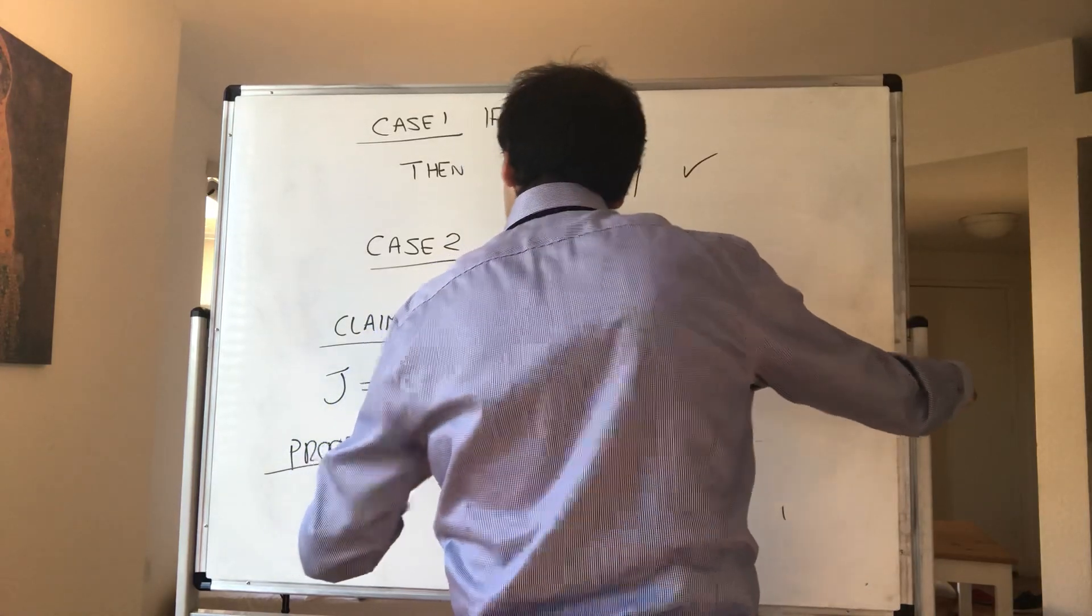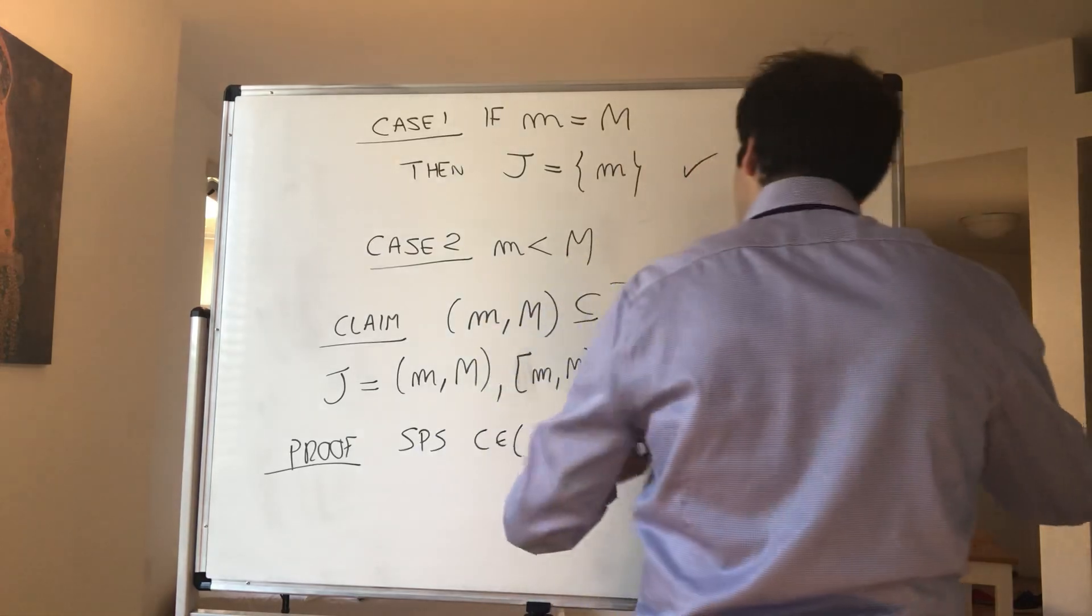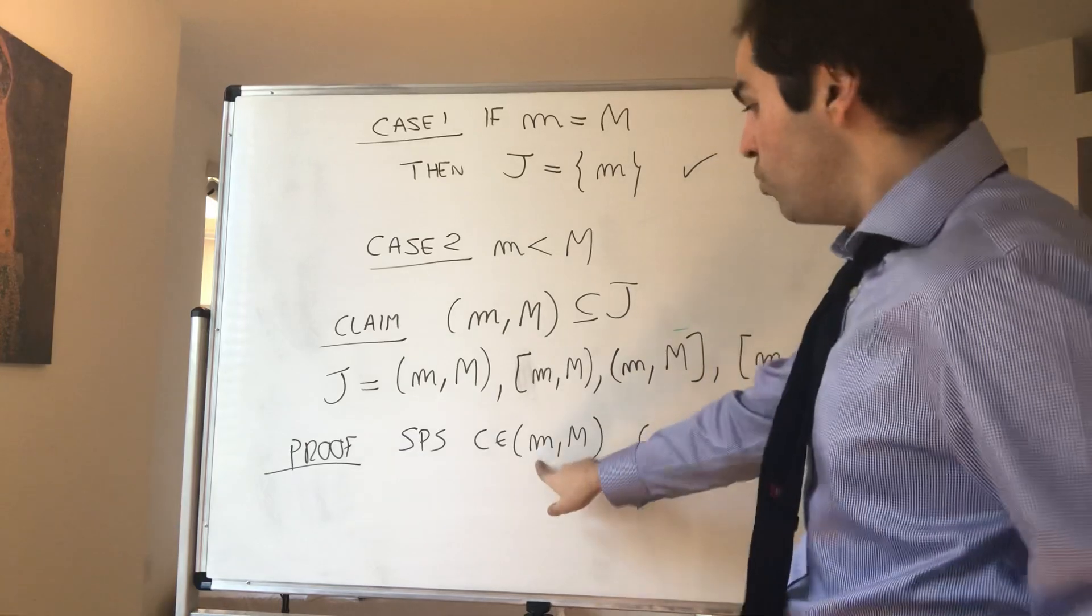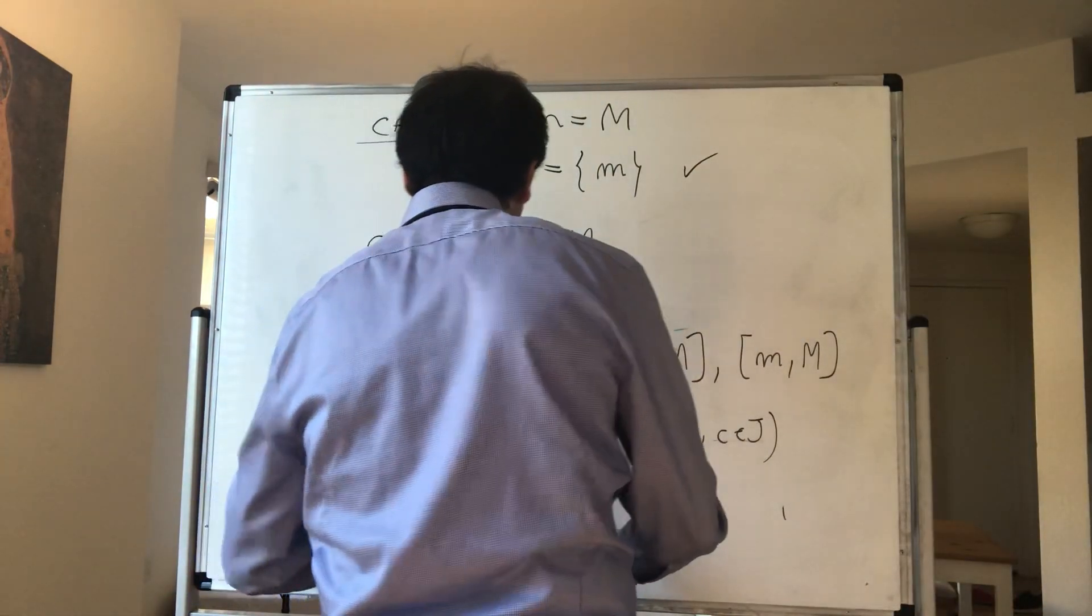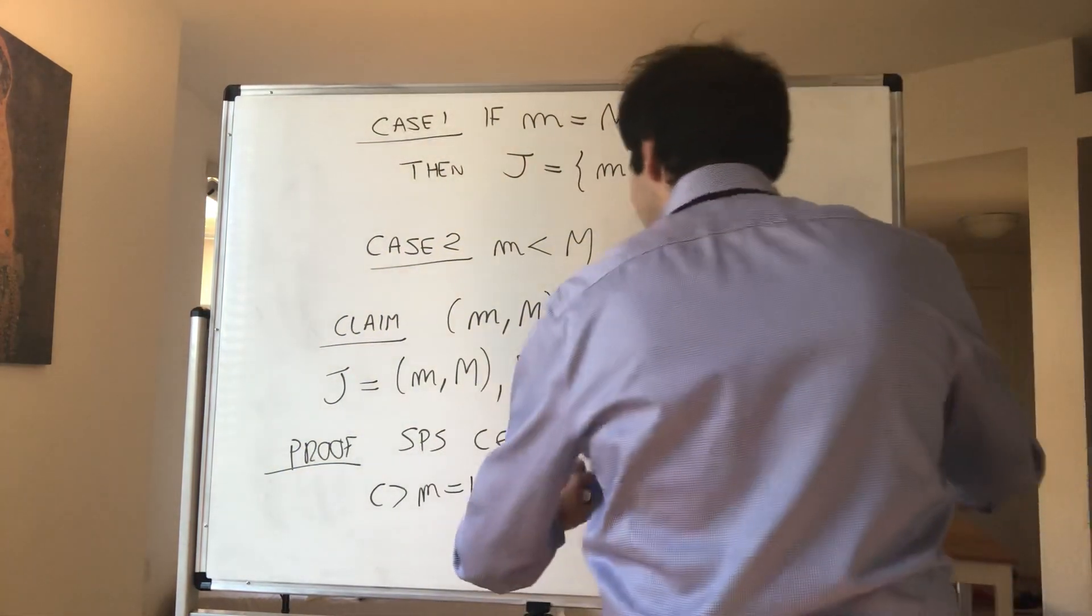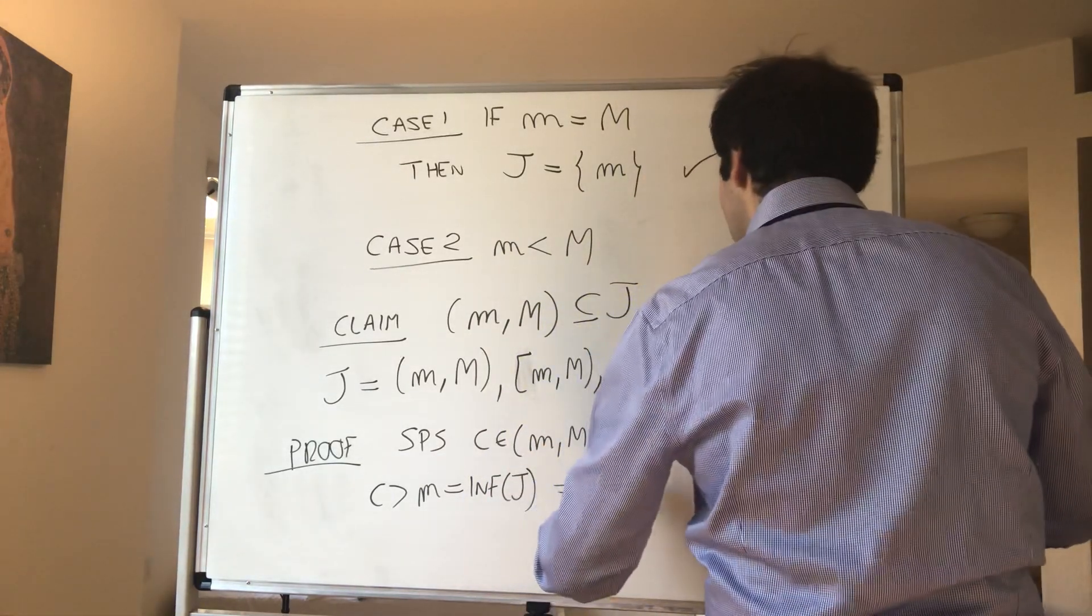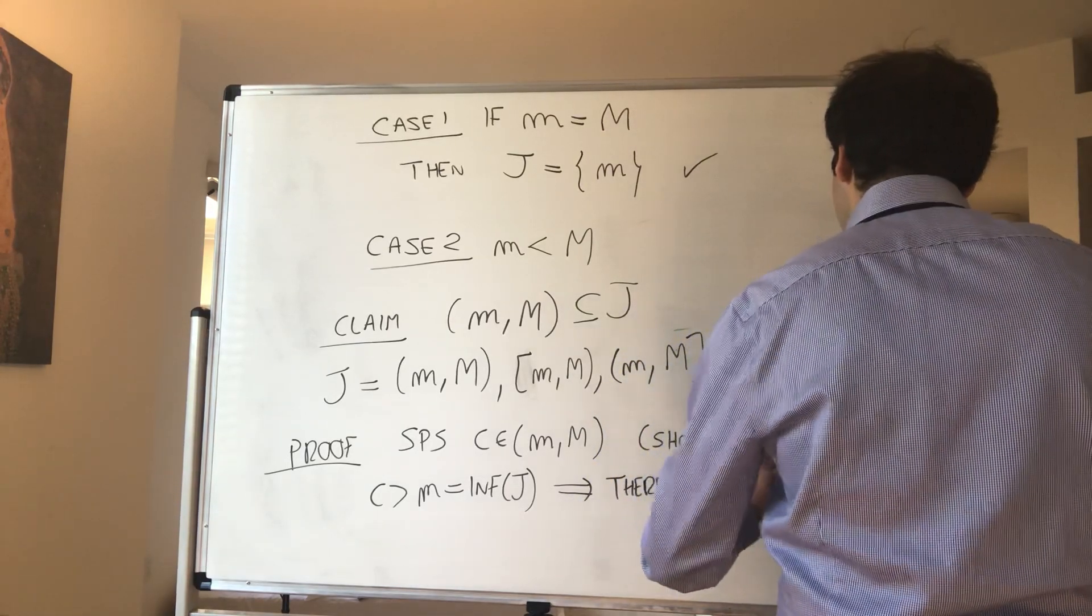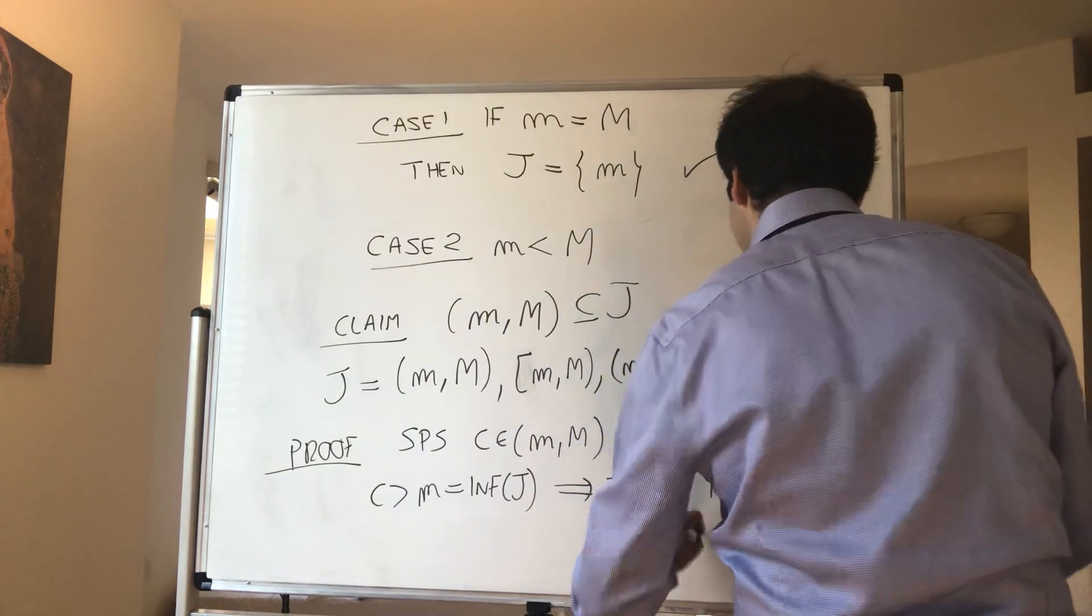All right, and now let's prove this claim. Really nice application of the definition of infimum and supremum. So suppose c is in (m, M) and we want to show c is in J. Now on the one hand, we have that c is bigger than little m, which remember is the infimum.